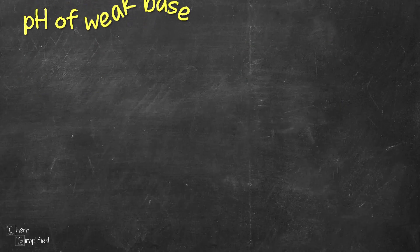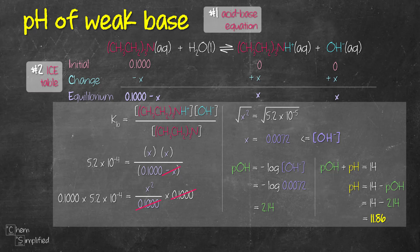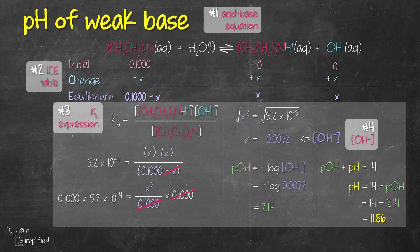To recap the steps for calculating pH from Kb: first, write out the acid-base equation; then use the ICE table to find equilibrium concentrations for each term; write out the Kb expression and plug in the concentrations to find the concentration of hydroxide ion; finally, use the pH equations to calculate pH. That completes the calculation of the pH of a weak base.